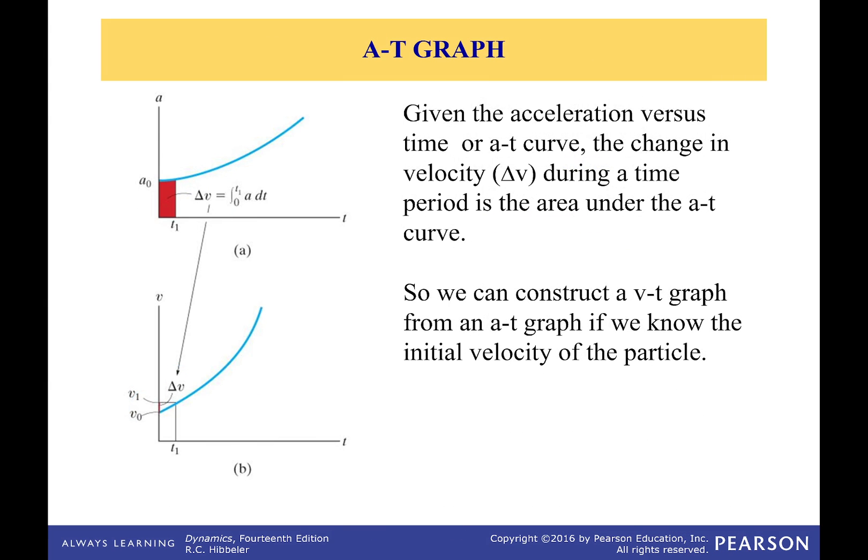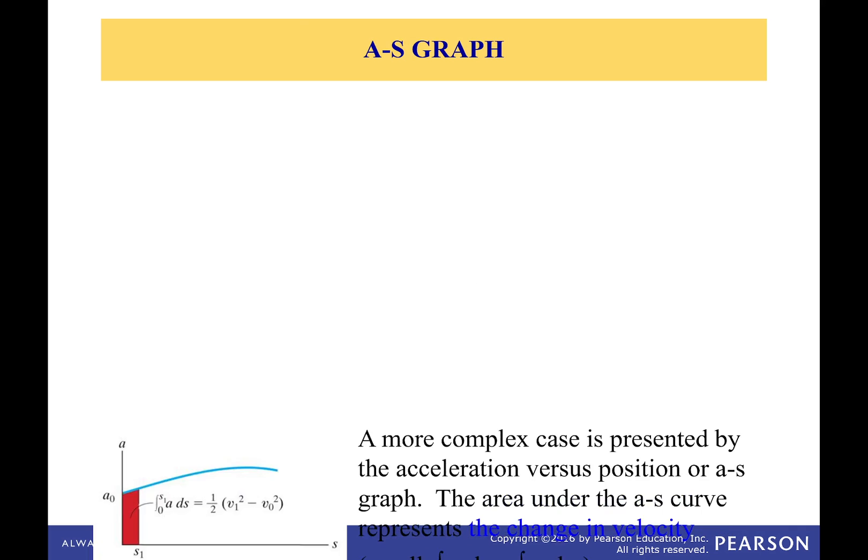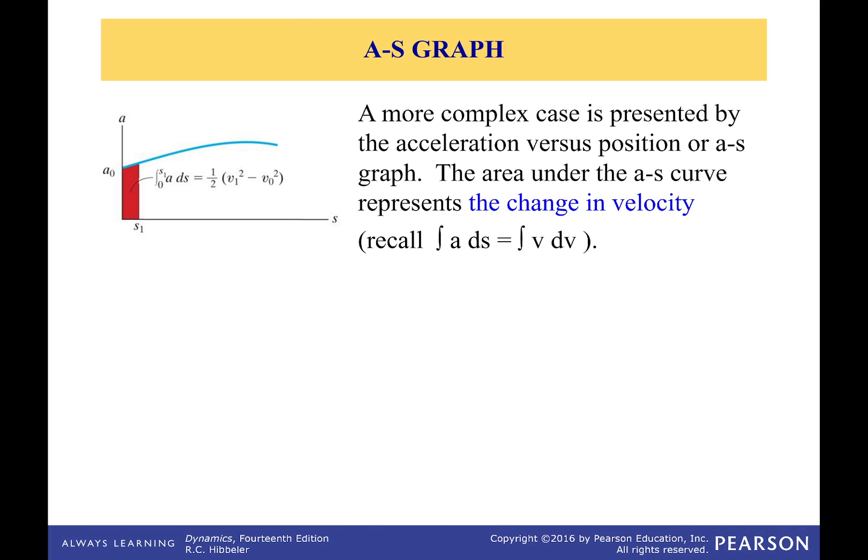The ST graph we mentioned already. VT graph, super easy. AT graph, also the same. AS graph. Here's the one where it gets weird. Okay, so the AS graph is one of those ones where it's a little bit more crazy because you have acceleration as a function of position. And in this case, you're using this equation right here.